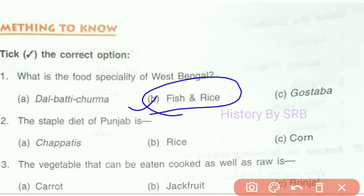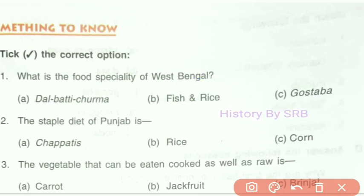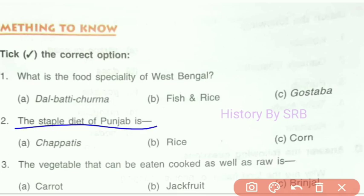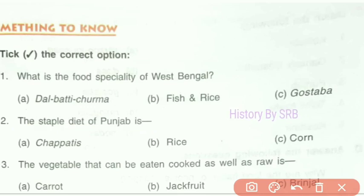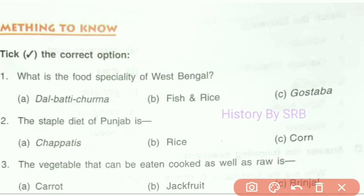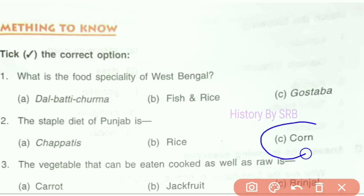The next question asks: what is the staple diet of Punjab? The answer is makke di roti and sarson da saag — corn. So the correct option is option C, corn.